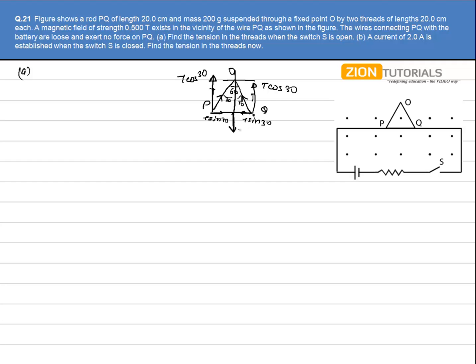So the downward force will be equal to Mg. So I can write 2T cos 30 is equal to Mg.